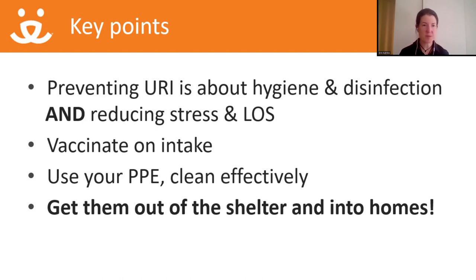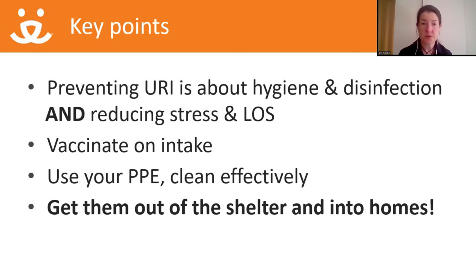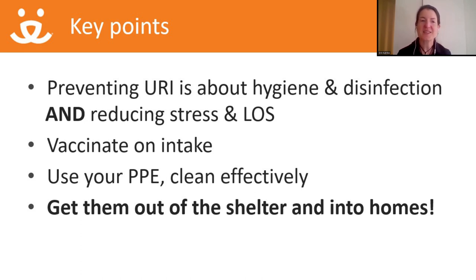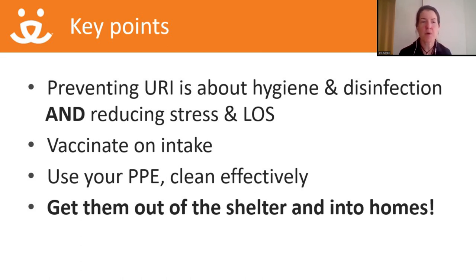Key points for preventing upper respiratory in shelter cats: it's about hygiene and disinfection, but really it's about reducing stress and length of stay. Use vaccines with appropriate storage and handling — vaccinate on intake according to a shelter schedule. Remember that a large percentage of even healthy-looking cats can be shedding URI pathogens, so we'll never eliminate these diseases from our population. Use PPE, clean effectively — any cat can potentially be contagious. At the end of the day, the most important thing is to get them out of the shelter and into homes.